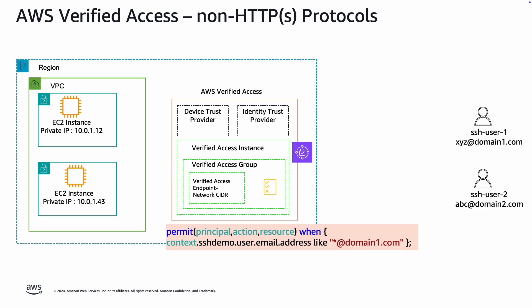Next, we'll create our Verified Access endpoints. In this case, we will use the network CIDR-based endpoints, which are the new endpoints we have released. Once these network endpoints are available, when SSH user 1 tries to SSH into the EC2 instances, based on the policy defined at the group level, this user will be allowed. But when user 2 tries to SSH, the request will be blocked because the policy only allows users with the domain name domain1.com. Let's go to the console and see how it works in action.